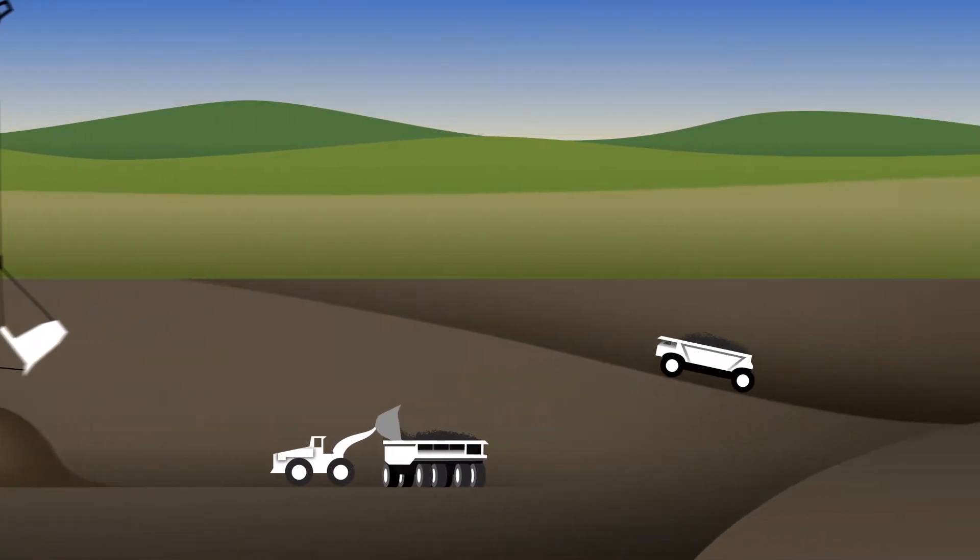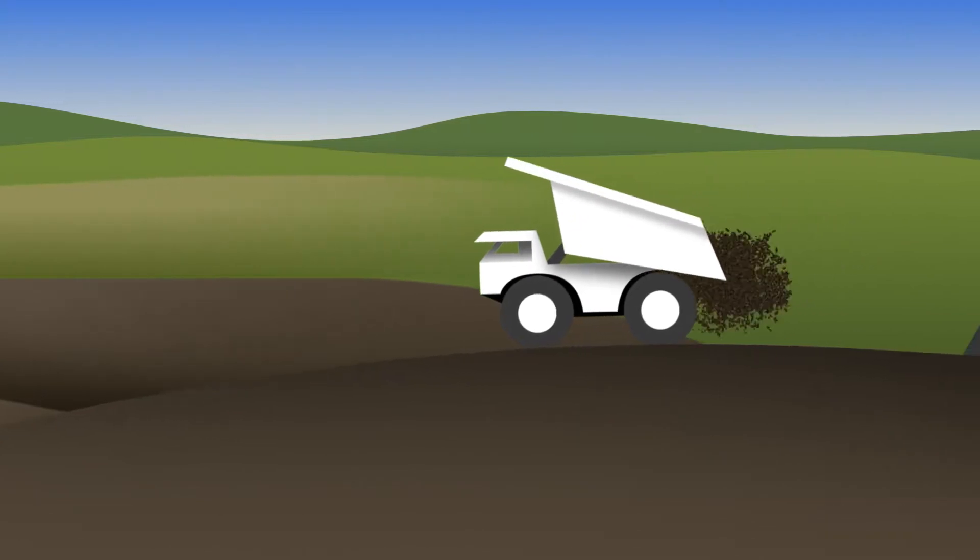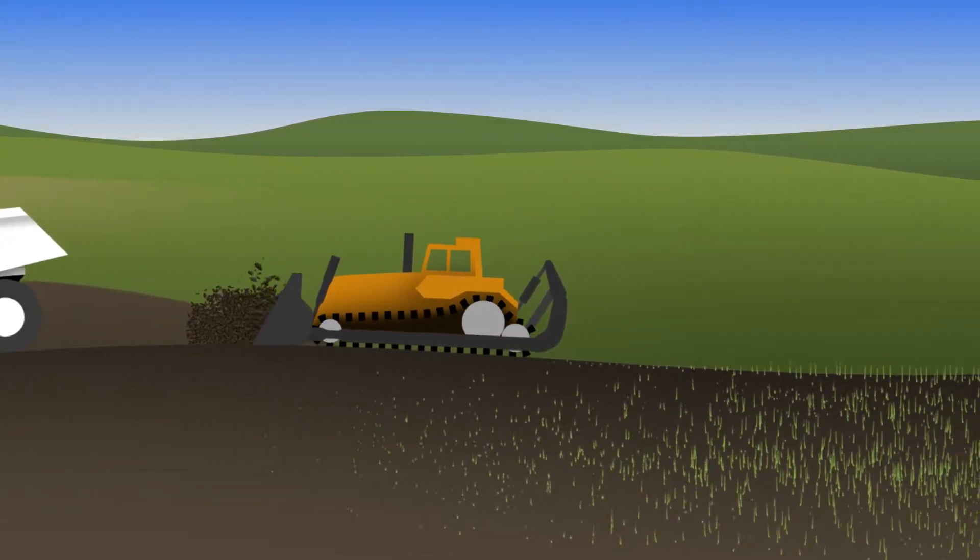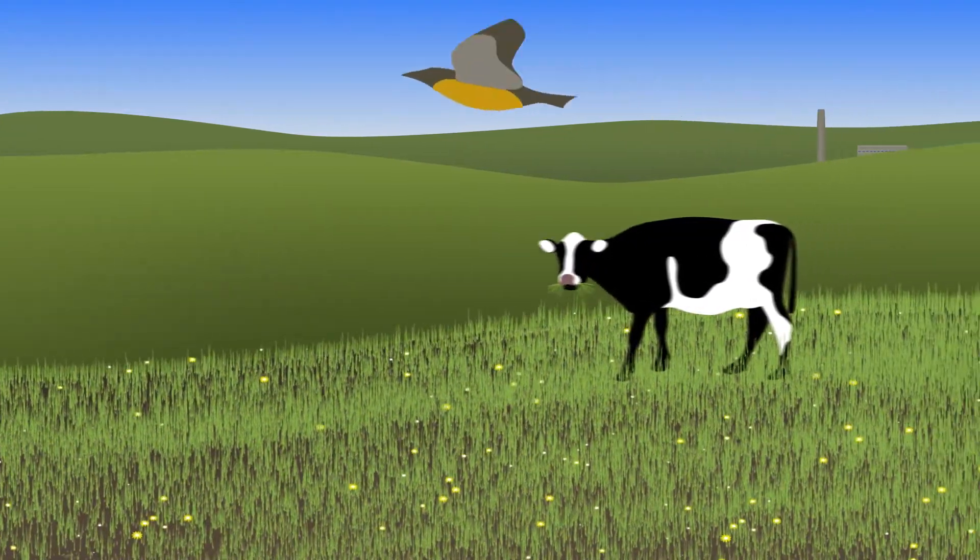We mine the coal, take it to a nearby power plant, and then reclaim the soil, putting it back in its original layers. The rich topsoil is once again ready for crops, prairie grass, cattle, and wildlife.